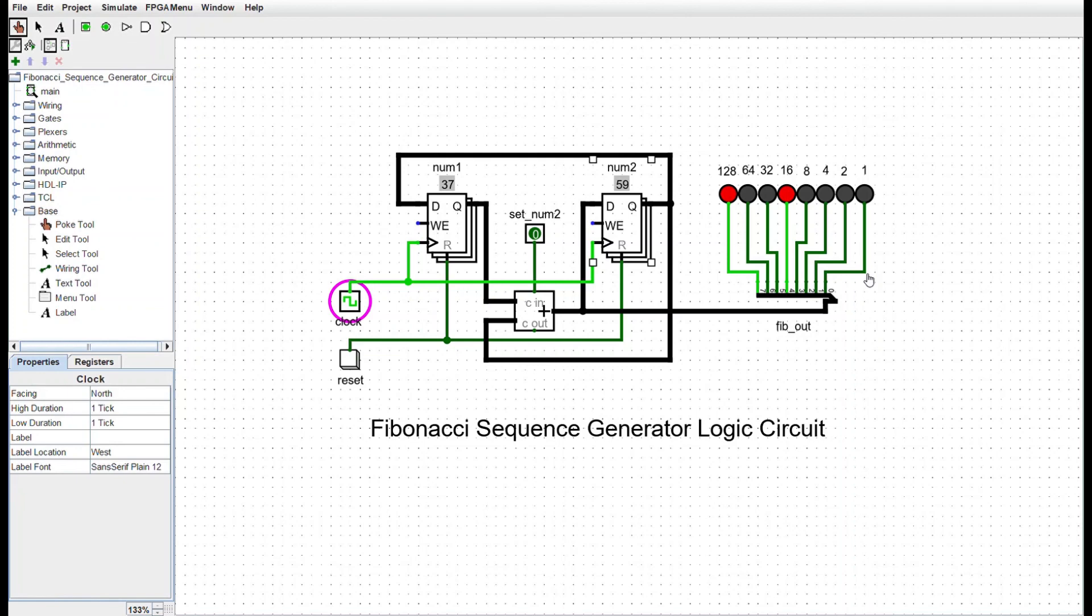I just went through the first 10 phases of this Fibonacci sequence generator in Logisim and showed you a truth table. I hope that helps you out. Thanks for watching.